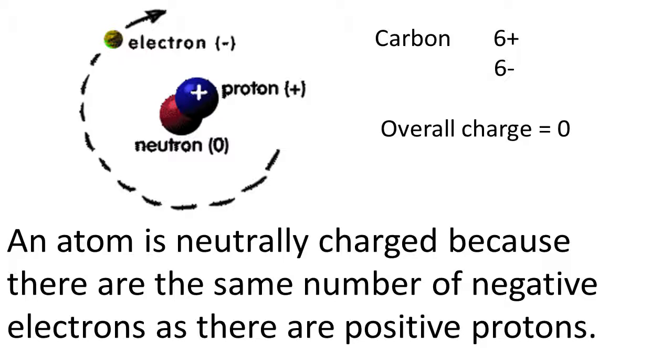So, for example, carbon. Carbon has got six protons in its nucleus, so it's got an overall charge of plus six. It's also got six electrons going around the outside, so that's six negative charges. Six pluses cancel out six minuses, and the overall charge of the whole atom is neutral.